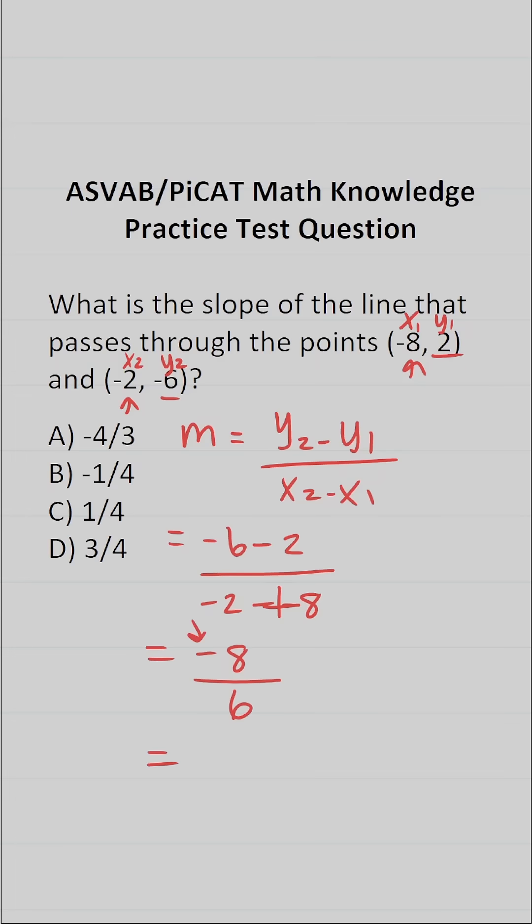Here we have a negative divided by a positive. So we know our answer is going to be negative. This isn't an answer choice because we can simplify this by a common factor of 2. In other words, 8 divided by 2 is 4, 6 divided by 2 is 3. So the slope of our line is -4/3, which is answer choice A.